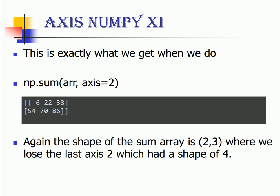Again if you notice the shape of the sum array is 2 x 3 where we lose the last axis 2 which had a shape of 4 in our case.